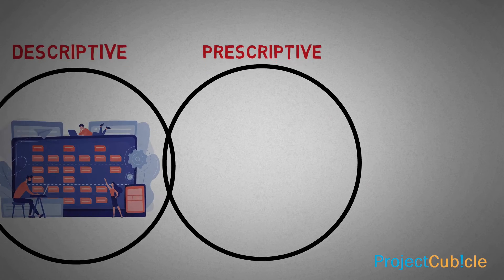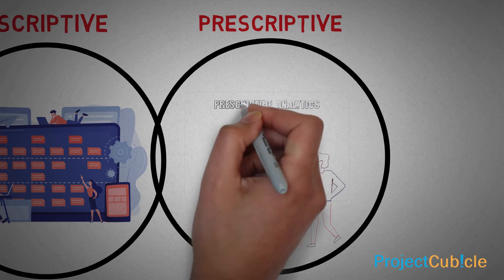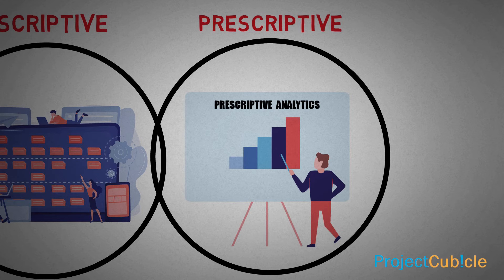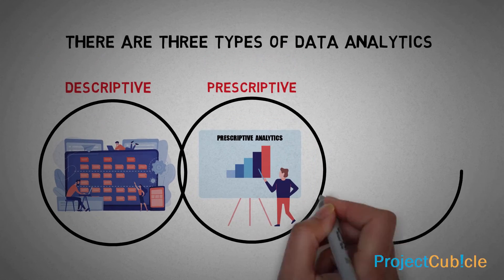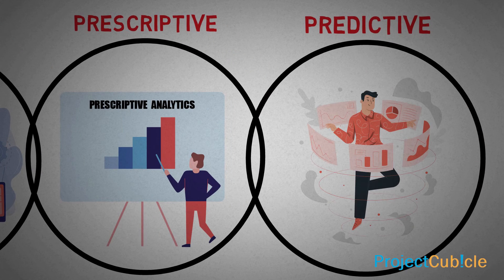2. Prescriptive: this analytics makes use of machine learning to help businesses decide a course of action based on a computer program's predictions. 3. Predictive: this data analytics uses current and past data to let you make predictions about the future or other unknowns.